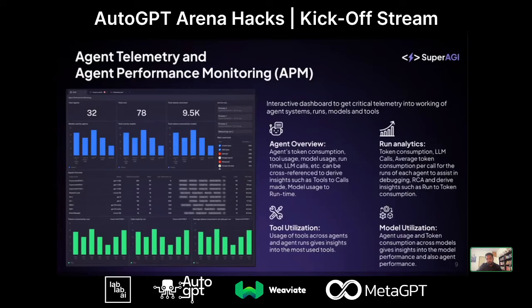Another key problem with agents is how do you define when an agent has completed a particular goal? That's where agent telemetry — what we call agent performance monitoring — comes in. We offer robust analytics around tool utilization of an agent, trajectory analysis, figuring out when an agent has hit a goal, reliability and consistency built over subsequent runs, and model utilization and token consumption.